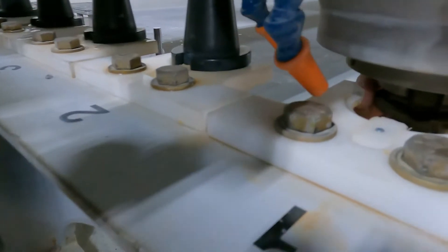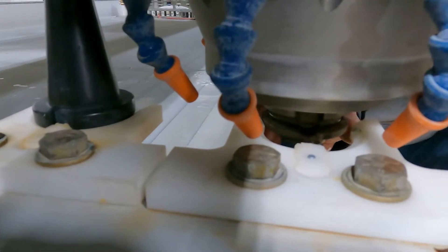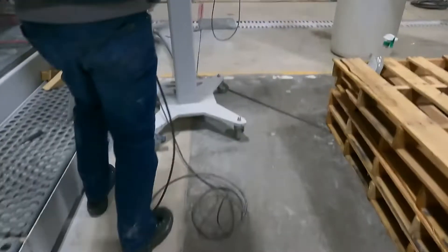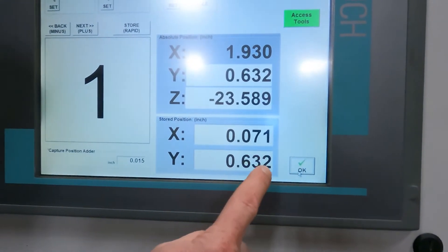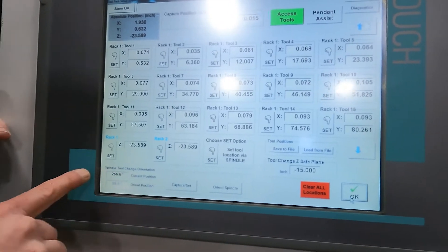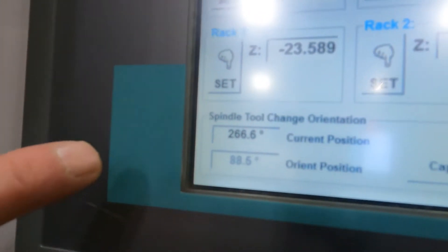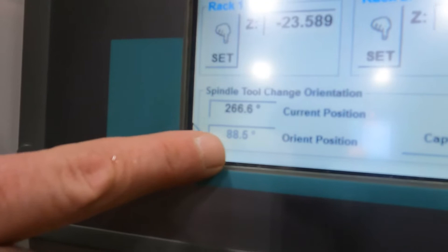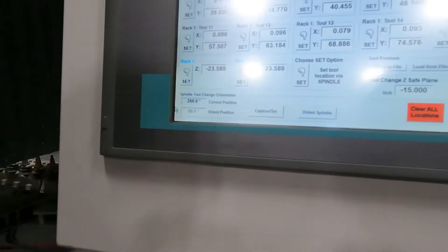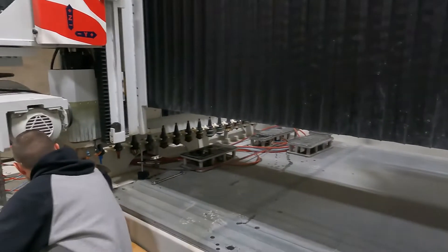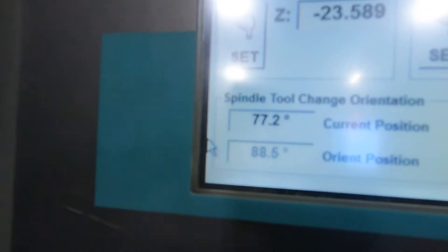We're going to go back to the screen for one moment here because I want to check my position. I can see my current position is at 266.6. I want to try keeping that to a lower number when setting the tool rack. You can see my original orientation position was only at 88. So I'm going to just spin the tool and now I'm closer to that 77.2.